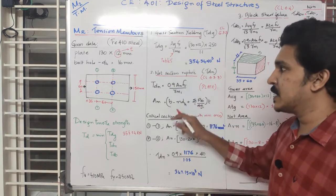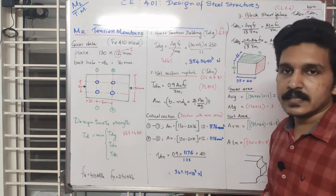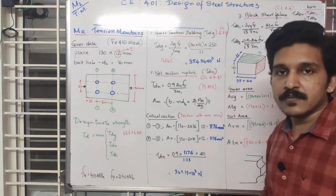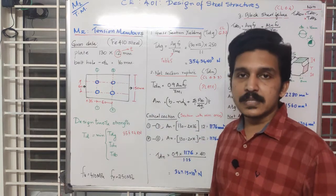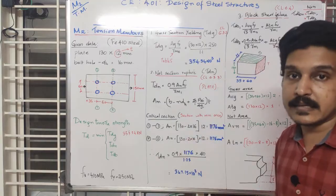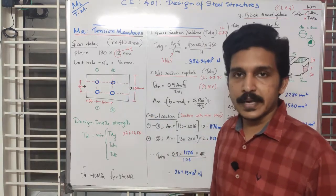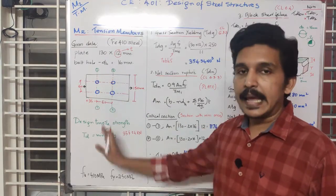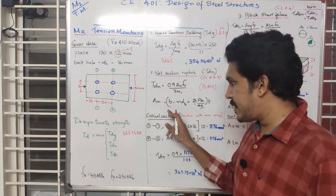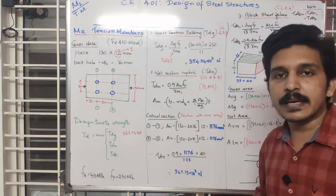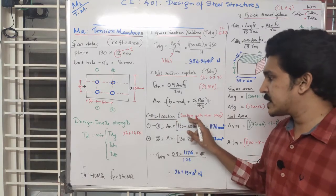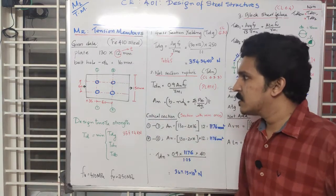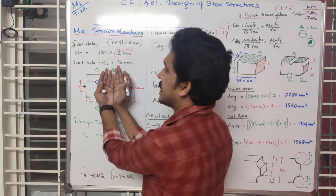Net area equals gross area minus bolt hole area. We need to find the critical section — the section with minimum net area. Rupture occurs at the critical section. We need to consider the section with minimum net area, which is the critical section.